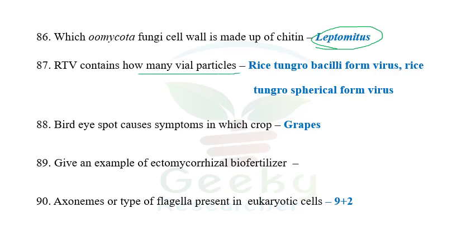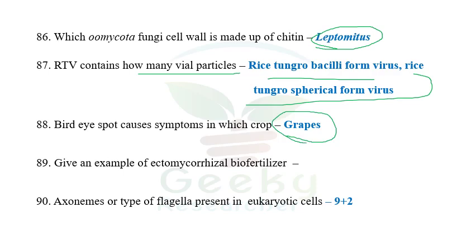The next question: rice tungro virus contains how many particles? Rice tungro virus contains two particles: Rice tungro bacilliform virus and Rice tungro spherical virus. Both are required for high virulence; the absence of either reduces the severity. The next question: Buddha spot symptoms can be observed in which crop? Grapes. Grape anthracnose is otherwise called grape bird's eye spot or Buddha spot, which is caused by Elsinoe ampelina.